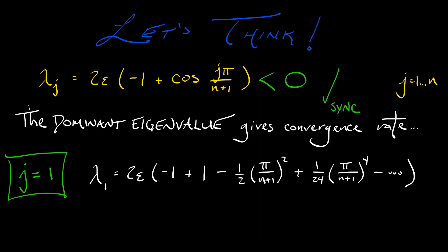Let's say we're in the regime where n is kind of large, so that I'm going to get rid of all those higher order terms. I notice that the negative 1 and the positive 1 cancel out. The 2 out in front of the 2 epsilon and the 1 half in the leading order term cancel out. And what I'm left with is a dominant eigenvalue that to leading order is negative epsilon times pi squared divided by quantity n plus 1 squared. And what that tells me is that this system converges to a synchronized state in a manner that is linear in epsilon and inverse quadratic in n, the number of spinners.